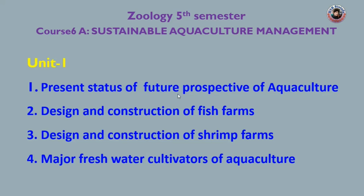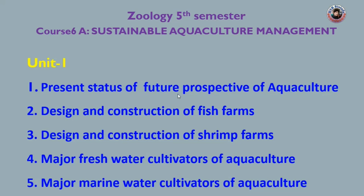The fourth important question is major freshwater cultivators of aquaculture, and the fifth one is major marine water cultivators of aquaculture. This is the first unit, covering 25 important questions overall, with 23 questions including long answers and short answers.